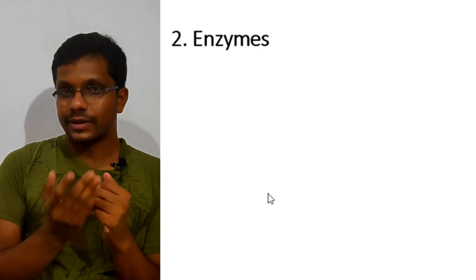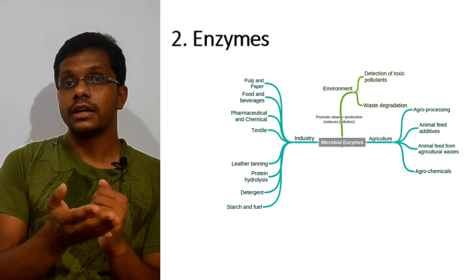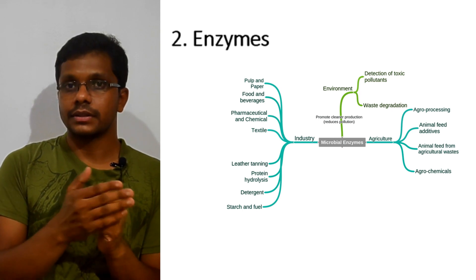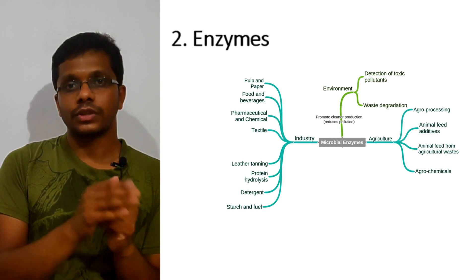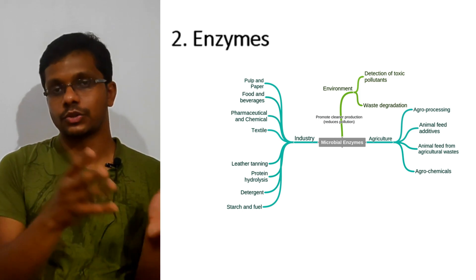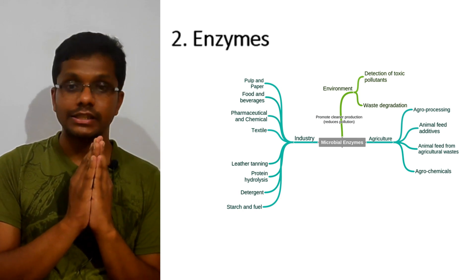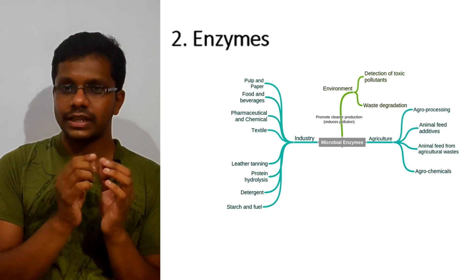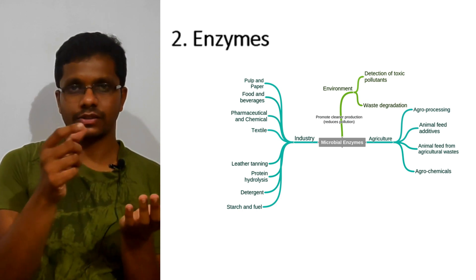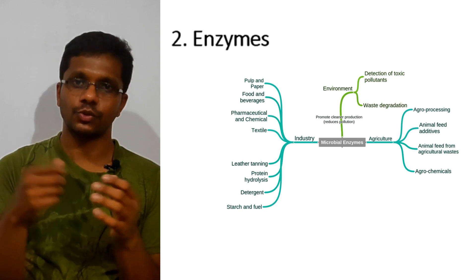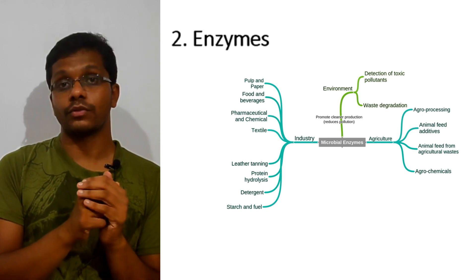Examples include amylase, used in the brewing and baking industries to break down large starch molecules into glucose and maltose. Protease is used in the detergent industry. Glucose oxidase is used in glucose detection kits — such as the glucocheck equipment — which use glucose oxidase as an enzyme to sense the amount of glucose in the blood.